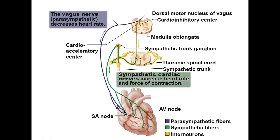The SA node is a pacemaker cell set to fire at 100 beats per minute — it drifts to threshold through sodium channels and fires an action potential 100 times a minute. But the vagus nerve acts on the SA node and AV node with vagal tone, and instead of 100 beats per minute, that SA node fires at 75 beats per minute because the vagus nerve brings that level down.